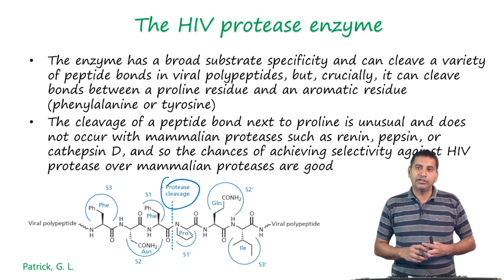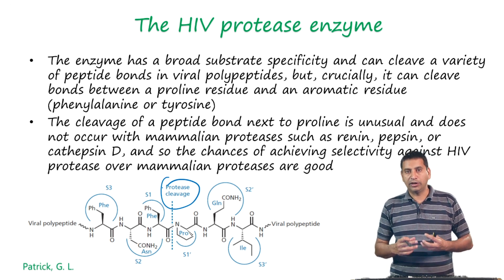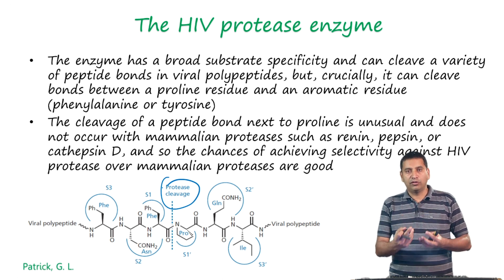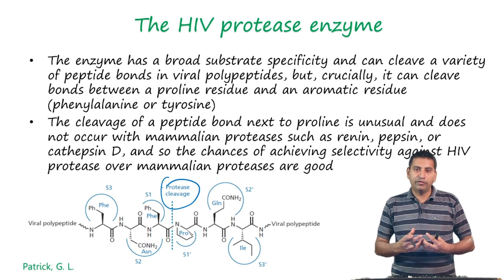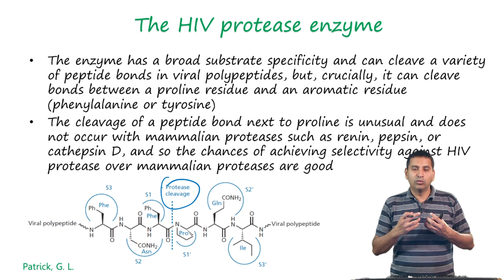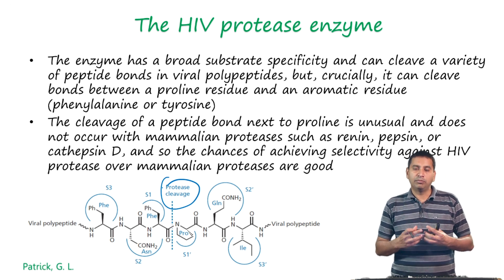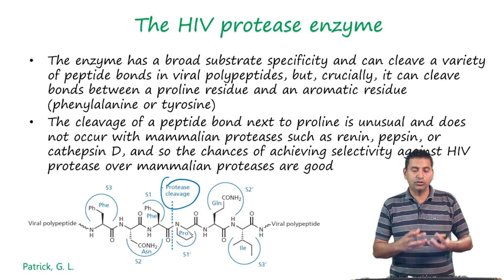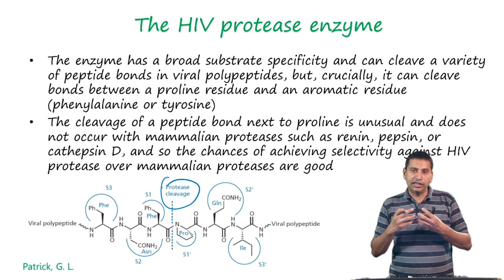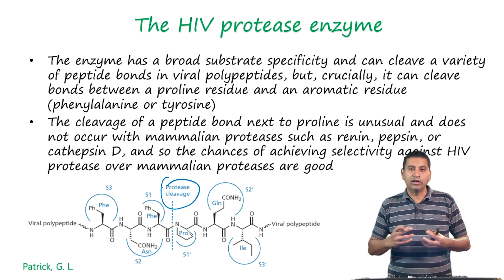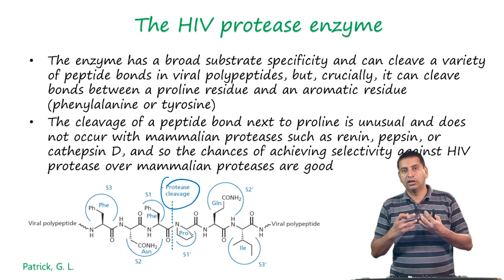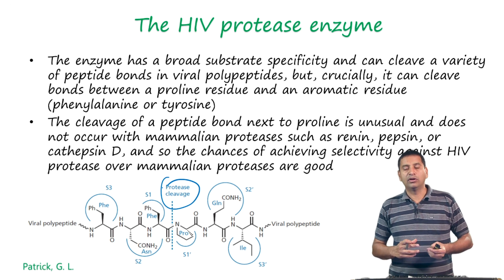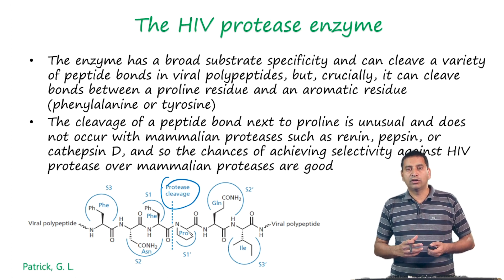The cleavage of the peptide bond next to proline is quite unusual and does not occur in mammalian proteases such as renin, pepsin, or cathepsin D. So the chances of achieving selectivity against HIV protease are actually quite good. When identifying an enzyme as a target we need to keep in mind whether that enzyme is present in the mammalian host cell, and whether there is anything unique about the enzyme that one could exploit to achieve selectivity.